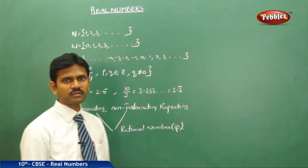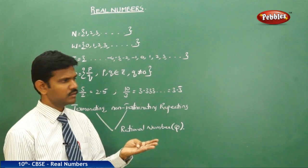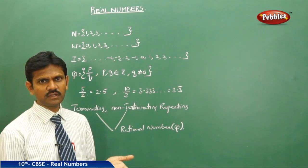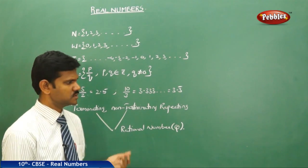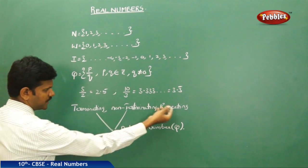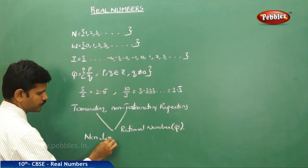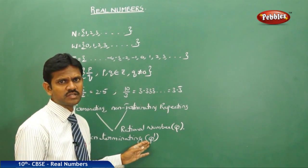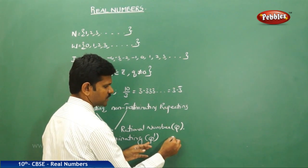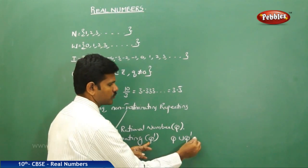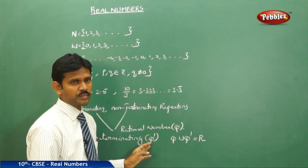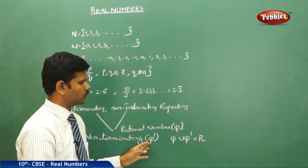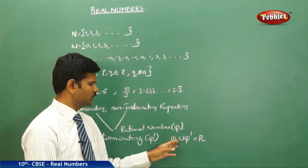Decimals are of three types: number one, terminating; number two, non-terminating repeating; number three, non-terminating non-repeating. Among the three, two are selected as rational numbers. The third one — non-terminating non-repeating — is called irrational numbers, denoted with Q dash. Therefore, the union of rationals and irrationals gives us real numbers. A real number is a combination of rational and irrational.